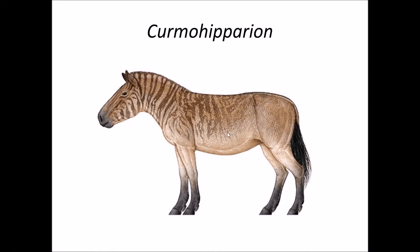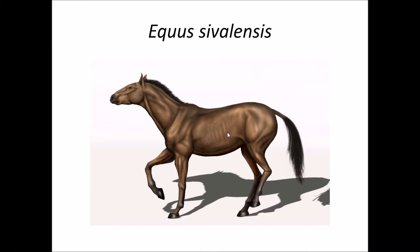Then we have Cormohipparion and Equus. Equus is the modern horse. Cormohipparion and Equus both belong to the same family, Equidae.